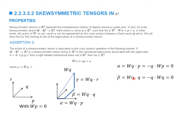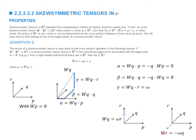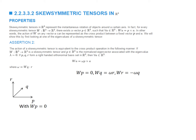Beta equals WQ dot Q. From the skew-symmetry property, WQ is perpendicular to Q, so this equals zero. The remaining component is omega by definition, since we defined WQ dot R as omega. So WQ equals omega R. Similarly, WR equals negative omega Q. We've now established that WP is zero, WQ equals omega R, and WR equals negative omega Q, so we know the action of W on all three basis vectors.